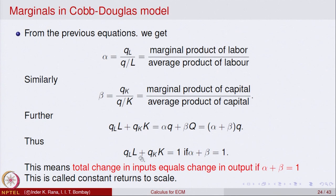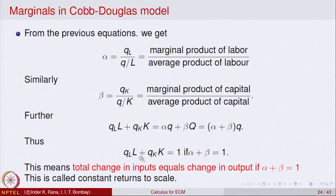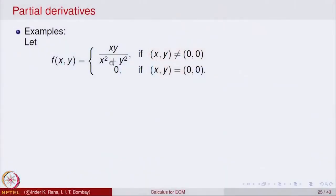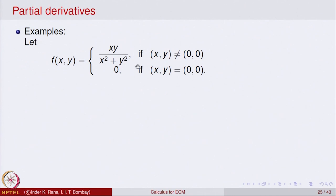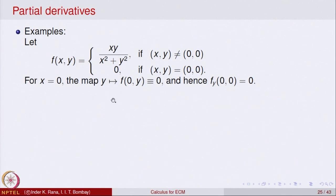Let us continue our study of partial derivatives of functions of two variables. Consider the function f(x,y) = xy/(x² + y²) when (x,y) ≠ (0,0), and f(0,0) = 0. This function is defined by the formula when the denominator is nonzero, and we define the value to be 0 at the origin.